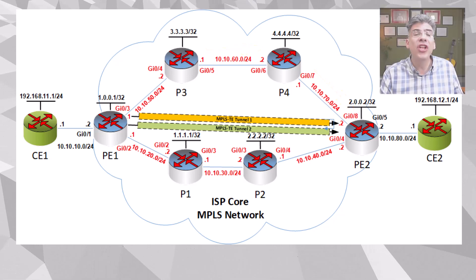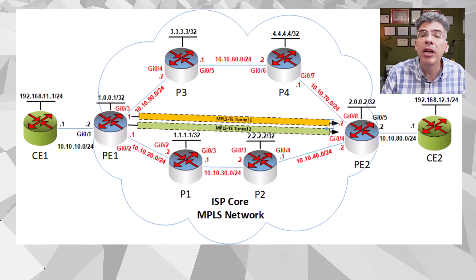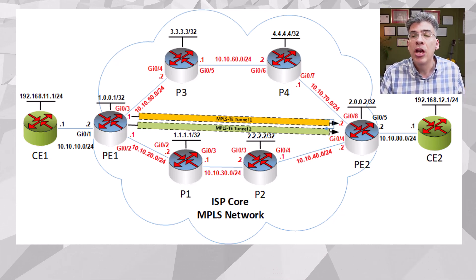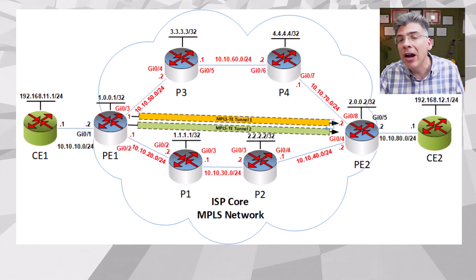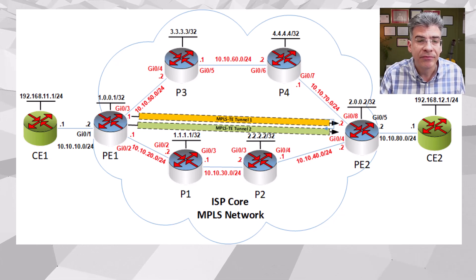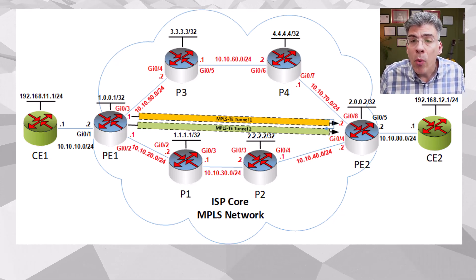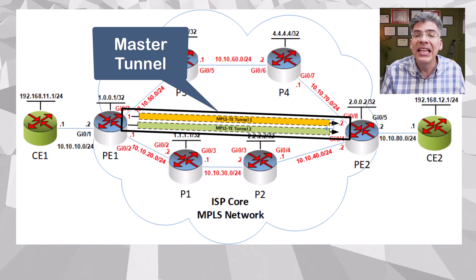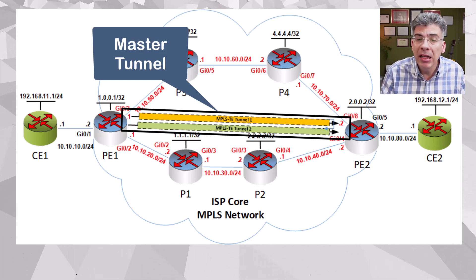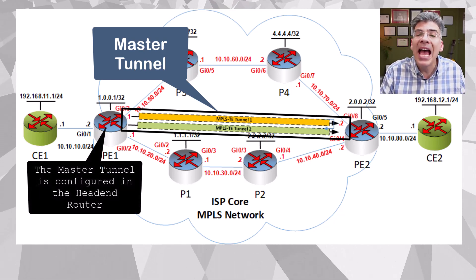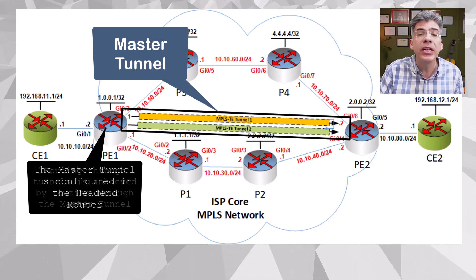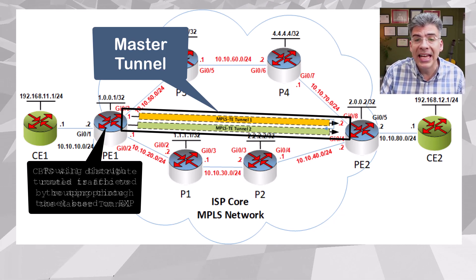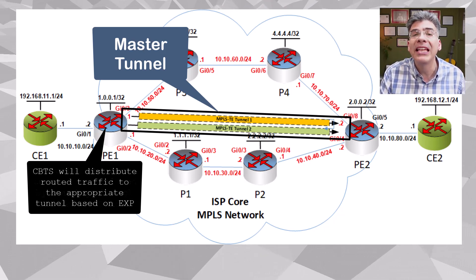Note that CBTS is not actually a routing mechanism. You still need some sort of routing configured to route traffic down your tunnels. It's more akin to a QoS mechanism, choosing a tunnel that is more appropriate to the requirements of the specific EXP value of your traffic. To configure CBTS, we configure what is known as a master tunnel — an entity that we create and assign the underlying TE tunnels to as member tunnels. We also use the master tunnel in our routing configurations, and CBTS will then distribute packets across the member tunnels based on the EXP values.